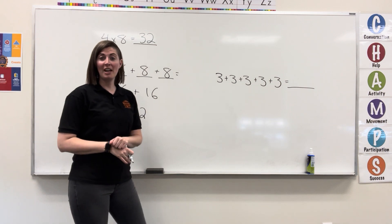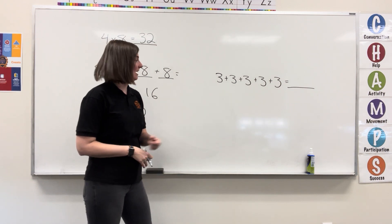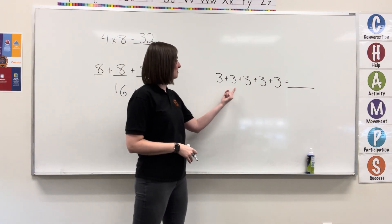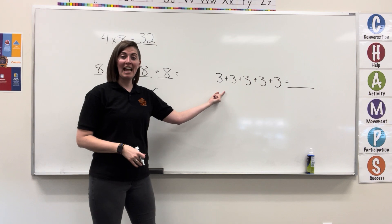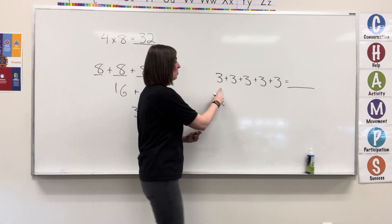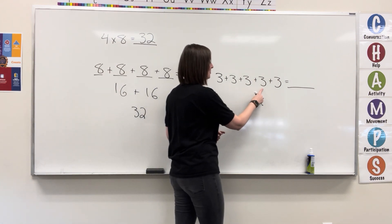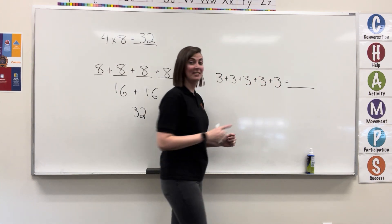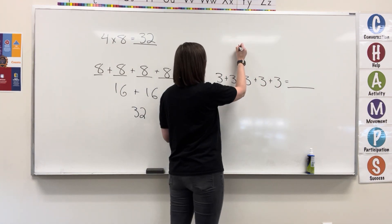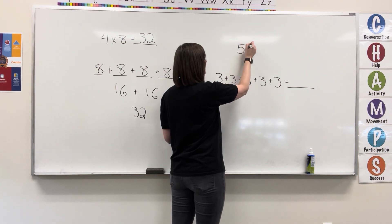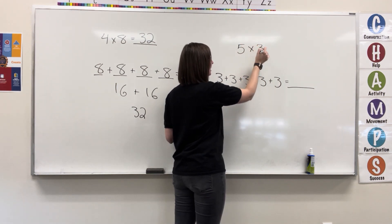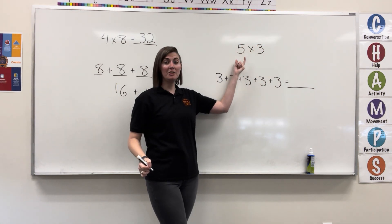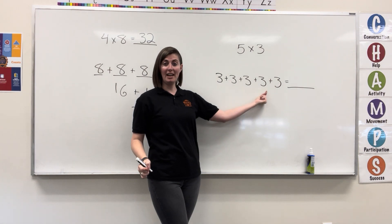It can also go the other direction. If I have 3 plus 3 plus 3 plus 3 plus 3, the 3 is being added 1, 2, 3, 4, 5 times. So, this is really 5 times 3. The 3 shows up 5 times in the addition problem.